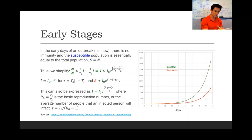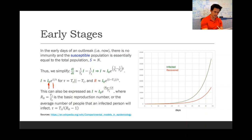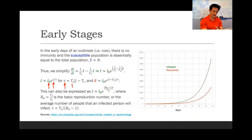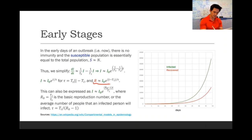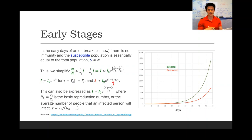This can be expressed in the form of the initial number of people infected times e to the t over tau, where tau, the time constant, is equal to the average spreading interval in parallel with the negative of the average time spent being infectious. And the number of people who have recovered or died is equal to the same expression, except with a time shift equal to the average time spent being infectious.